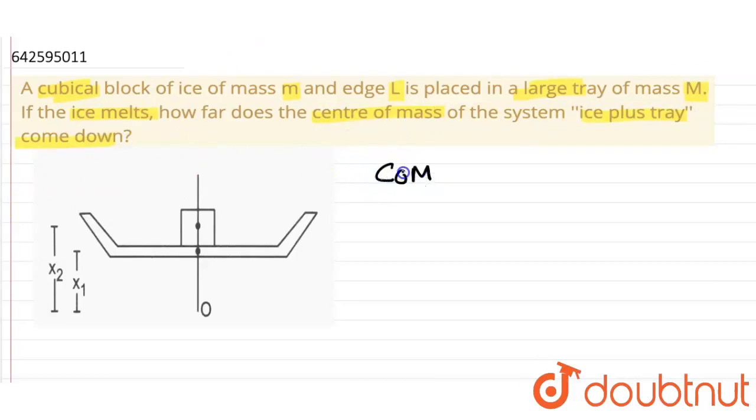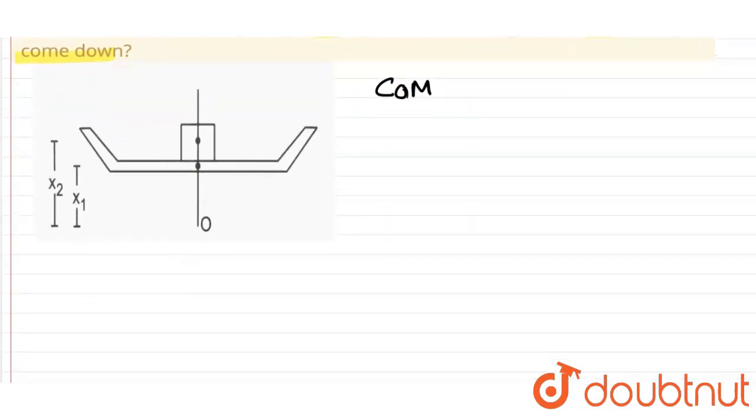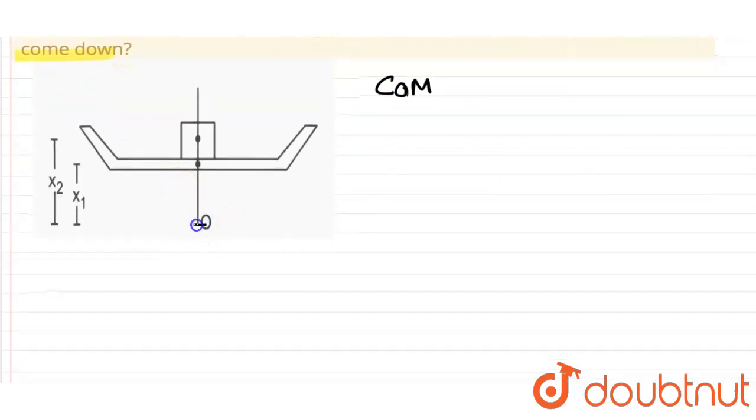So let's suppose this is the situation where O is the reference point and center of mass of tray capital M from the reference point is x1, and center of mass of ice from the reference point is x2.